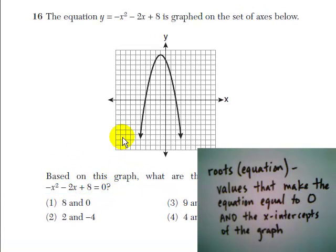So if we look at this graph, just ask ourselves, where does this parabola cross the x-axis? And I see it happens once at positive 2 and once at negative 4. So the answer is choice 2.